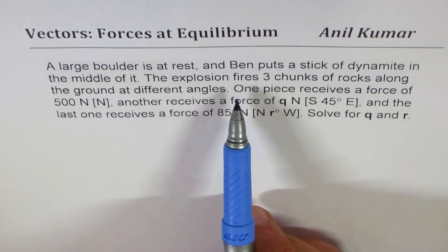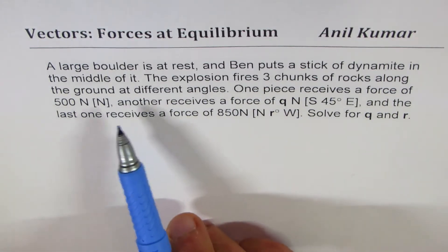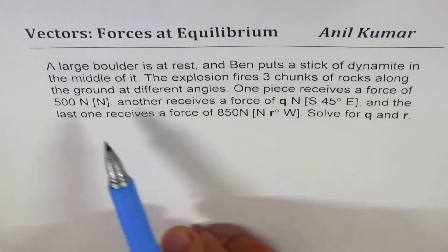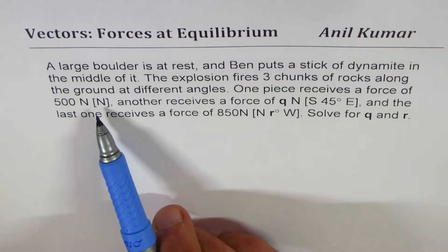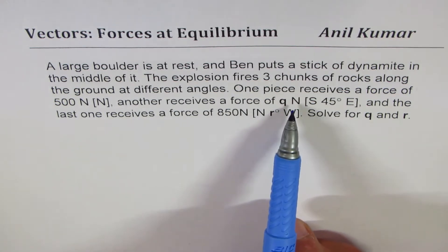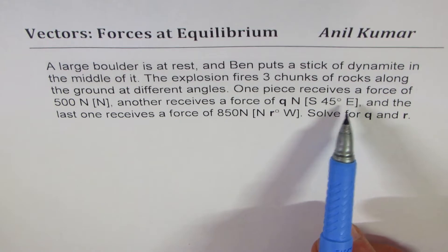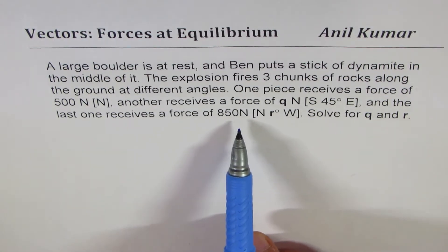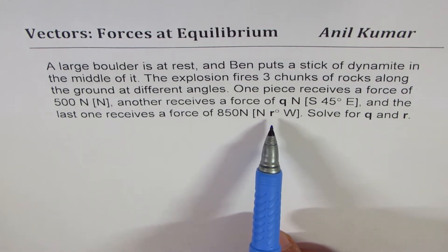The explosion fires three chunks of rocks along the ground at different angles. One piece receives a force of 500 newtons north, another receives a force of q newtons 45 degrees east of south, and the last one receives a force of 850 newtons r degrees west of north. Solve for q and r.